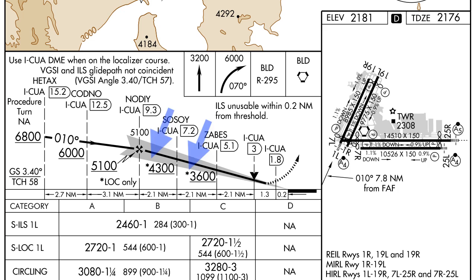An asterisk next to the altitude indicates some different requirement for that altitude from the main procedure on the approach. In this case, the asterisk next to 4,300 and 3,600 feet indicates that those altitudes are only applicable for the localizer-only procedure.